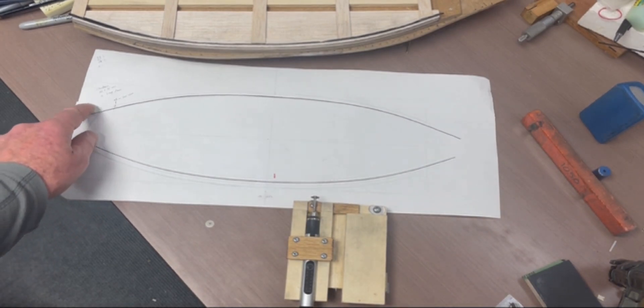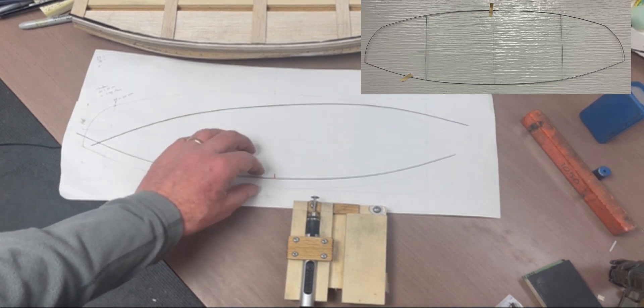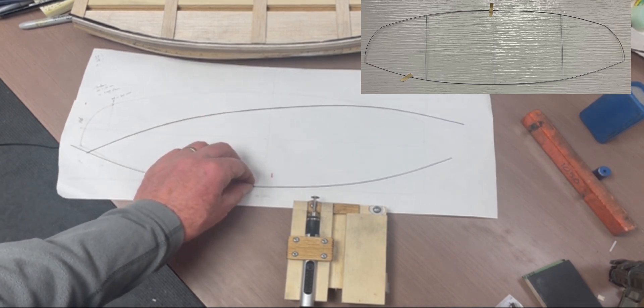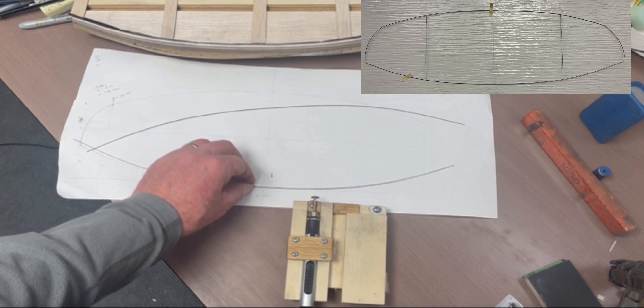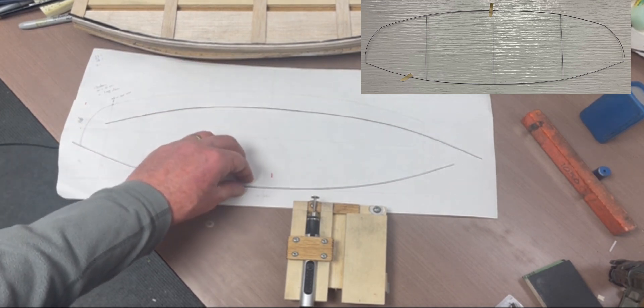So here you have two spars laying on the paper that will form my new leading and trailing edge, or spars as you call them in free flight.